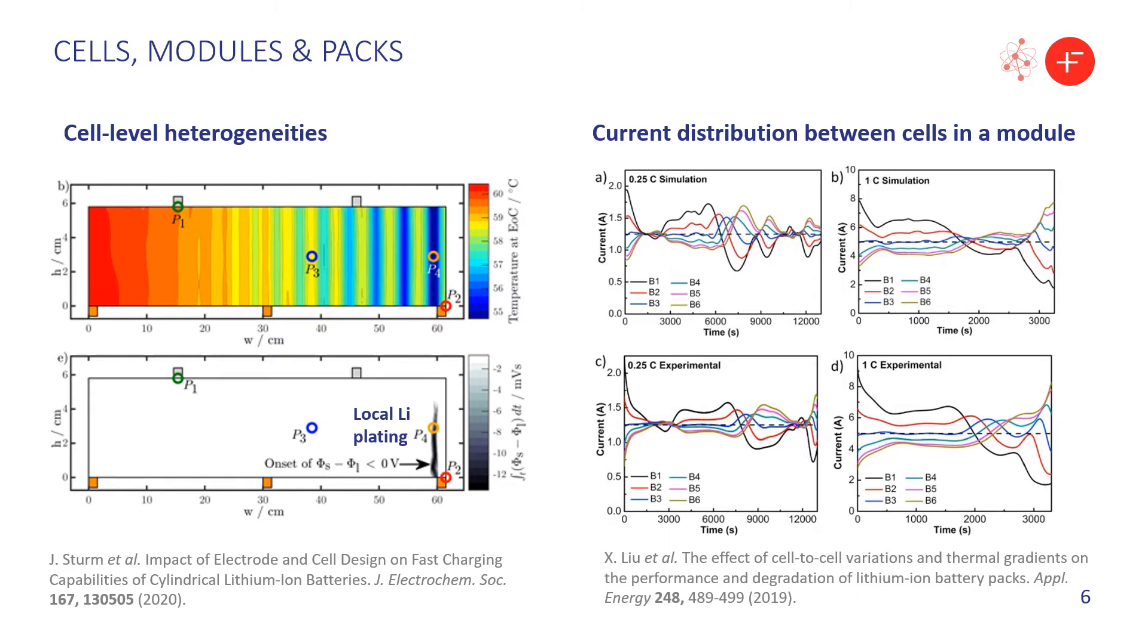While traditionally thermal management systems have been designed to reject the maximum amount of heat, recent studies have focused more on ensuring temperature uniformity or even preheating cells before fast charging to improve the diffusion rates. Having said that, pack level fast charging research is still relatively scarce.